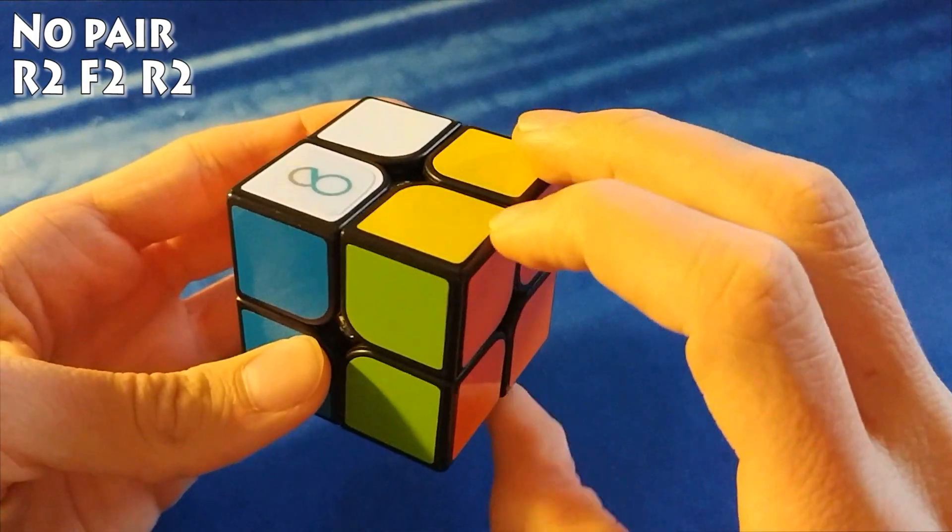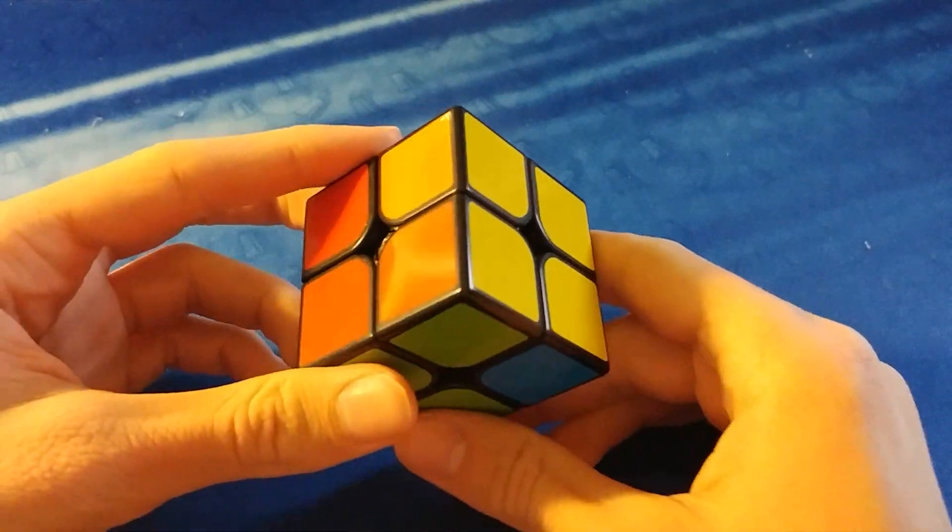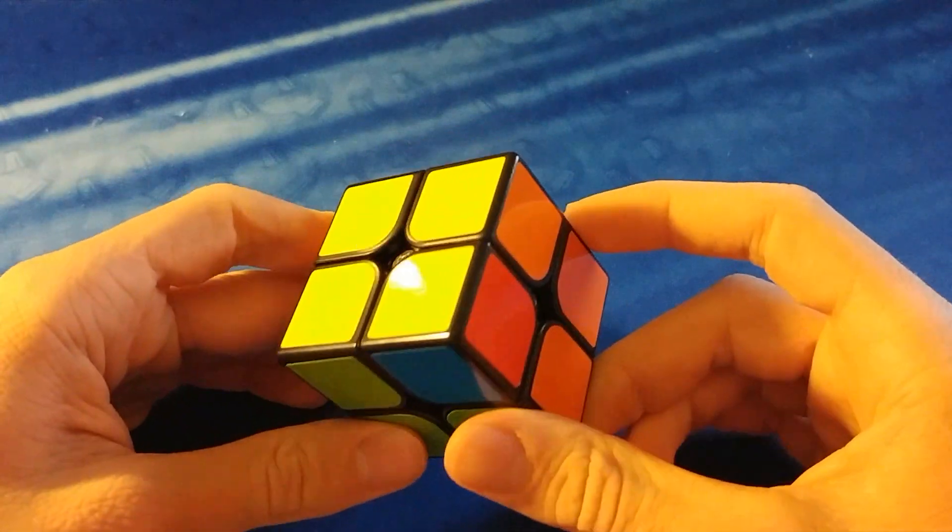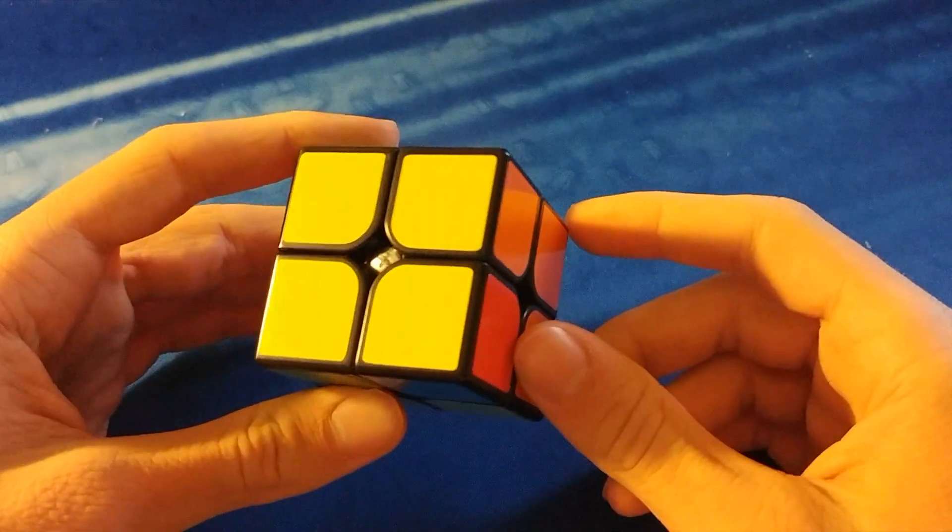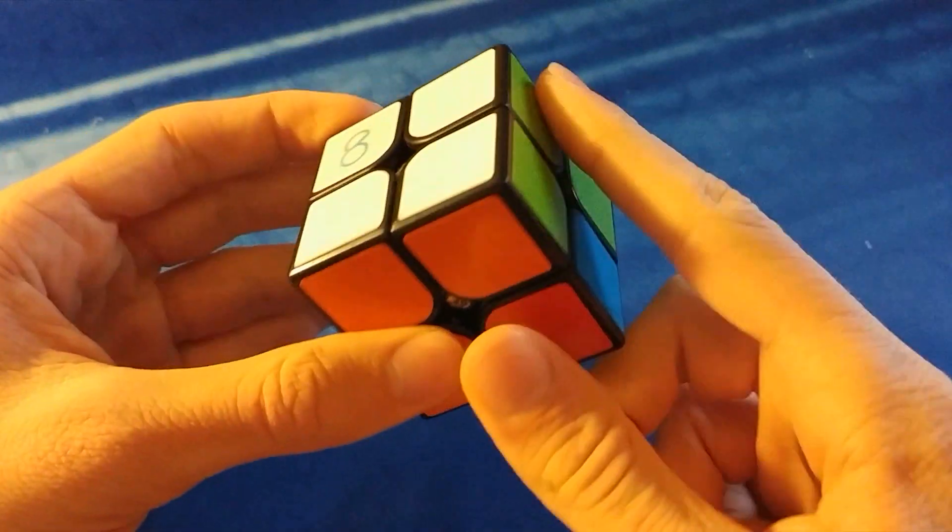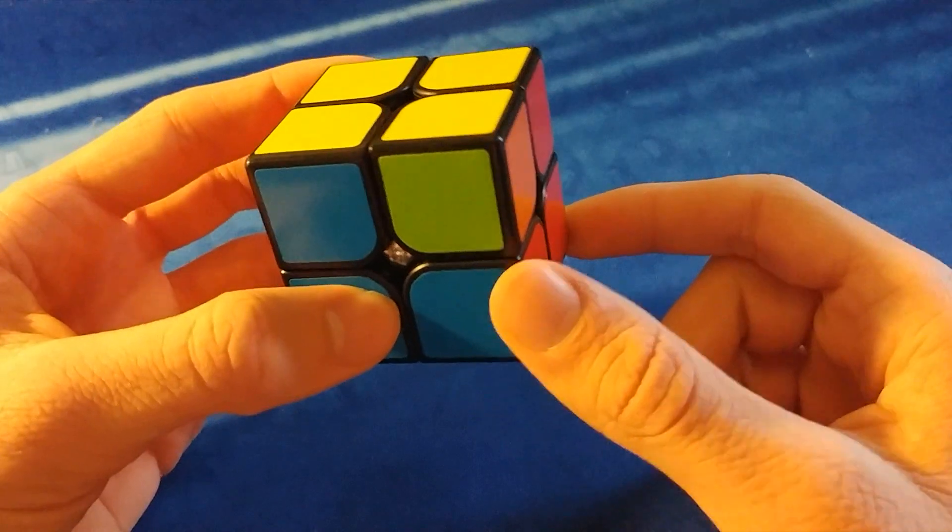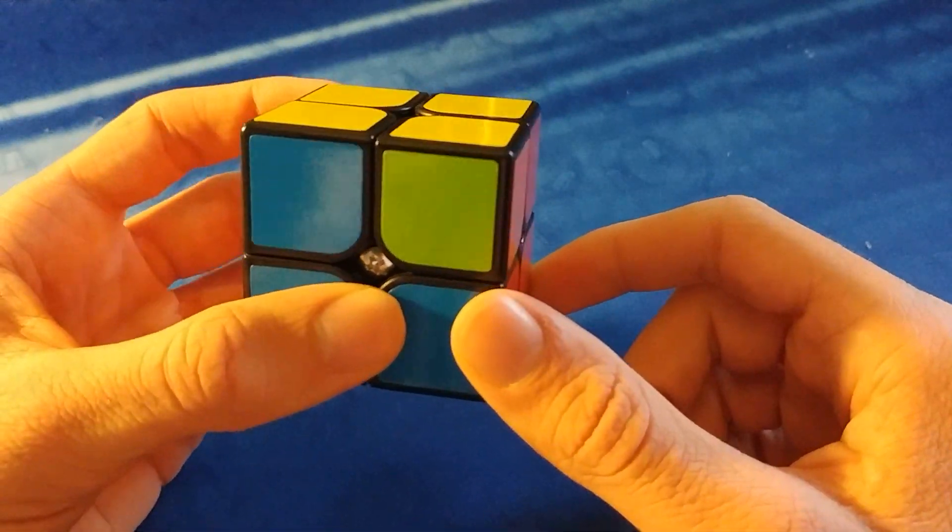So there are two cases you can get that are slightly longer, you can use PLL or CMLL algorithms for this. So here we have made a layer on the bottom, so we're going to need to switch these two pieces diagonally, so for this case you're going to want to use the Y perm.